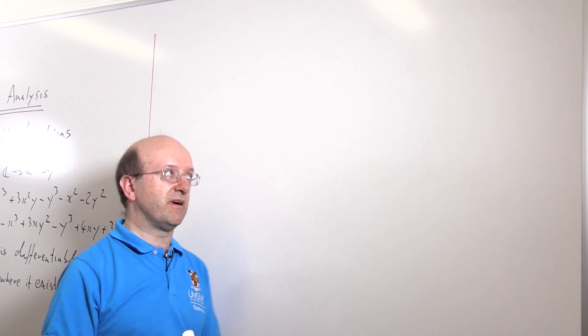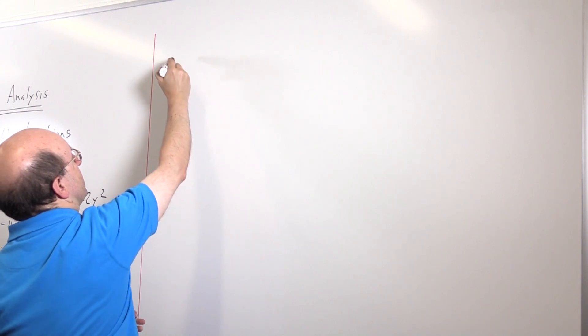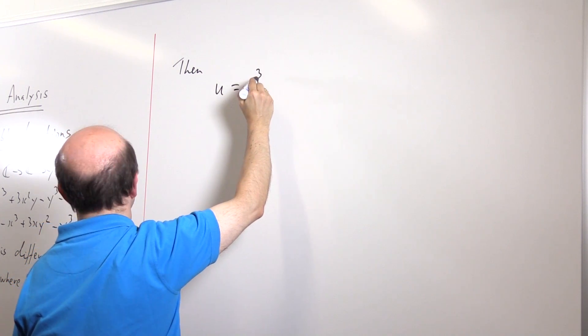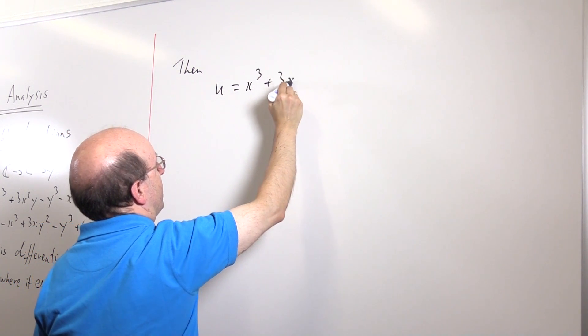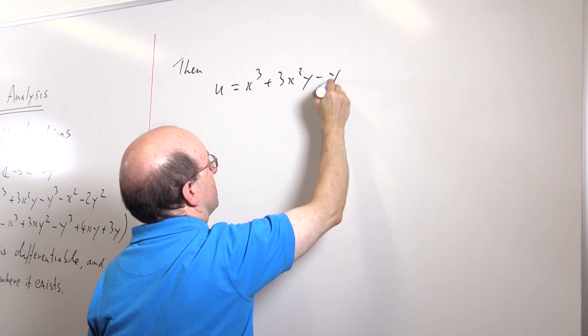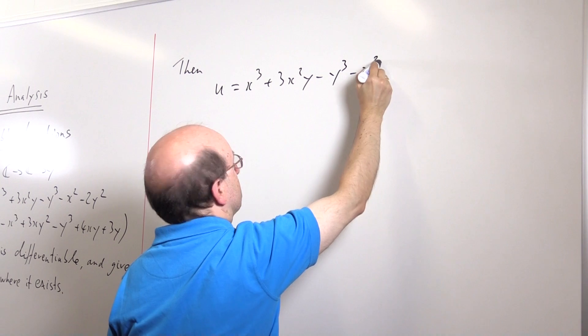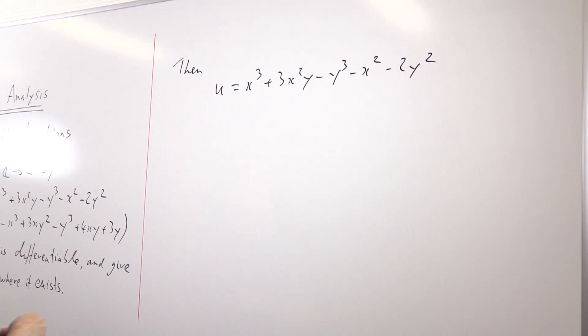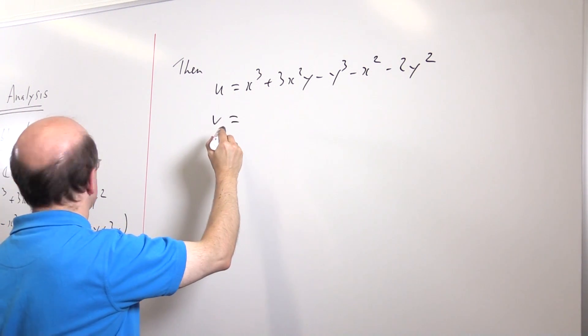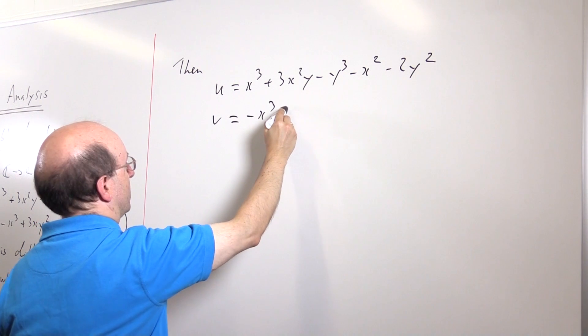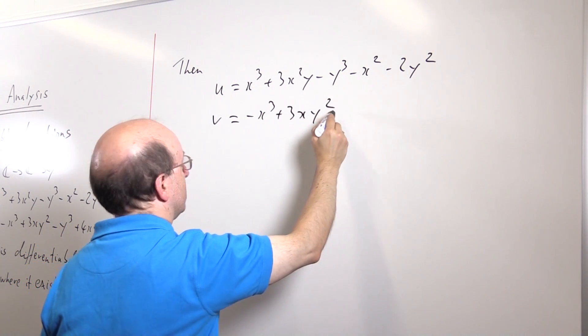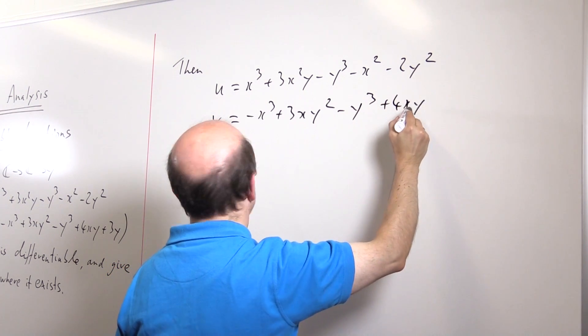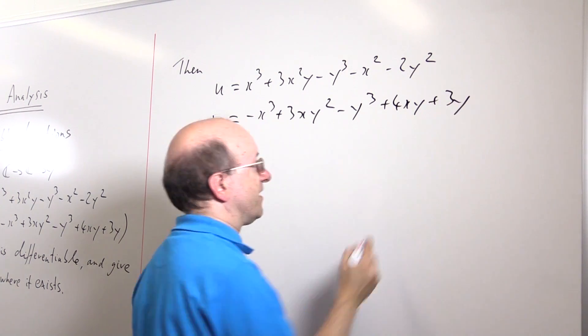All right, so the first thing we've got to do is write down the real and imaginary parts of this function. Making sure we put some English around this, of course. U is x cubed plus 3x squared y minus y cubed minus x squared minus 2y squared. And v is minus x cubed plus 3xy squared plus 4xy plus 3y.